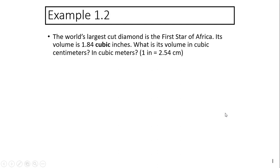Our last example: the world's largest cut diamond is the First Star of Africa. Its volume is 1.84 cubic inches. What is its volume in cubic centimeters and in cubic meters? Given conversion factor: 1 inch equals 2.54 centimeters. Another one you should know: 1 meter equals 100 centimeters.